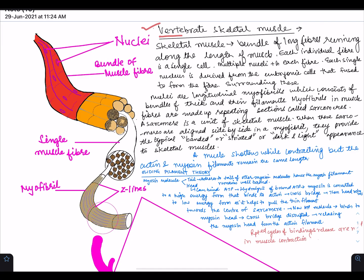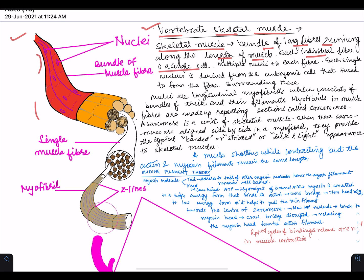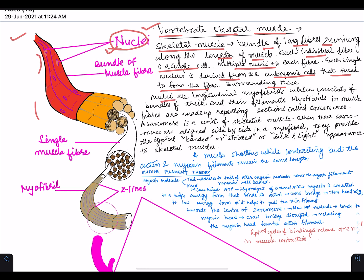Today we will study about the vertebrate skeletal muscle. Skeletal muscles are bundles of long fibers running along the length of a muscle. Each individual fiber is a single cell. Multiple nuclei are present in each fiber. Each single nucleus is derived from the embryonic cells that fuse to form the fiber. Surrounding these nuclei are longitudinal myofibrils, which consist of bundles of thick and thin filaments.